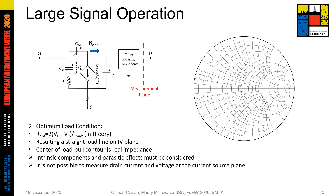A high-frequency transistor cannot be considered only as a voltage-controlled current source. There are other factors that have a direct impact on its performance, such as drain-gate capacitance, drain-source capacitance, and pads at the gate and drain. All these components affect the transistor's response and make it more frequency-dependent. According to load-line theory, if we ignore parasitics, there is an optimum load resistance to maximize output power and it's a pure real impedance value. However, if we include the effects of parasitic components, the device reveals maximum power at a different impedance value. That's why the optimum load impedance is a complex impedance value in high-frequency applications, and we cannot measure the transistor's performance at the current source plane.